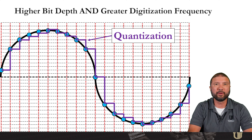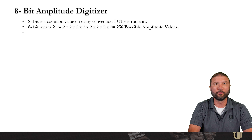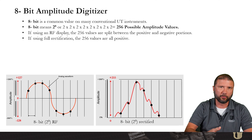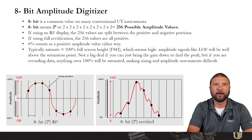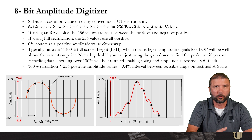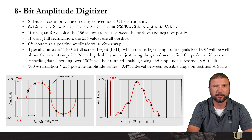Now we're going to discuss some of the common amplitude digitizer bit depths in the industry. 8-bit is a common value on many conventional UT instruments. 8-bit means 2 to the 8th power, or 256 possible amplitude values. If you use an RF display, the values are split between the positive and negative portions; if using full rectification, all those values are positive, and zero counts as a positive amplitude either way. These typically saturate at 100% full screen, meaning high amplitude signals like lack of fusion will be well above the saturation point — not a big deal if you just turn the gain down to find the peak, but if you're recording data, anything over 100% will be saturated, making sizing and amplitude assessments difficult. 100% saturation divided by 256 possible amplitude values gives 0.4% interval between possible amplitude values on a rectified A-scan.